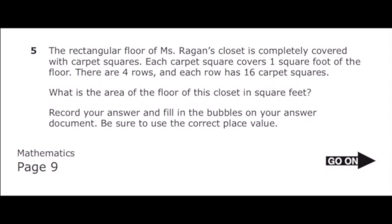This is number five from the 2022 third grade math STAR test. The rectangular floor of Miss Reagan's closet is completely covered with carpet squares. Each carpet square covers one square foot of the floor. There are 4 rows and each row has 16 carpet squares. What is the area of the floor of this closet in square feet? Each carpet square is one square foot, which is going to make this problem really easy.